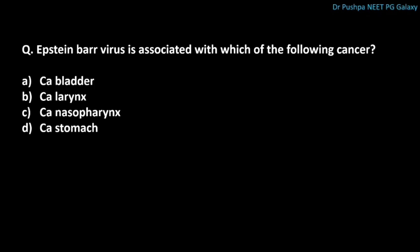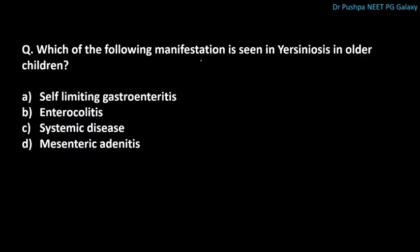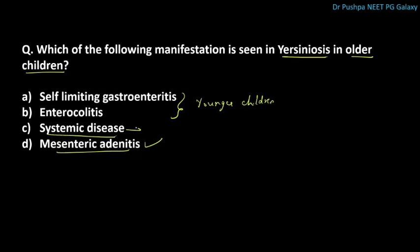Epstein-Barr virus is associated with carcinoma of the nasopharynx. Which manifestation is seen in yersiniosis in older children? The correct answer is mesenteric adenitis. In younger children, self-limiting gastroenteritis or enterocolitis is seen; in older children, mesenteric adenitis; and in adults, systemic disease.